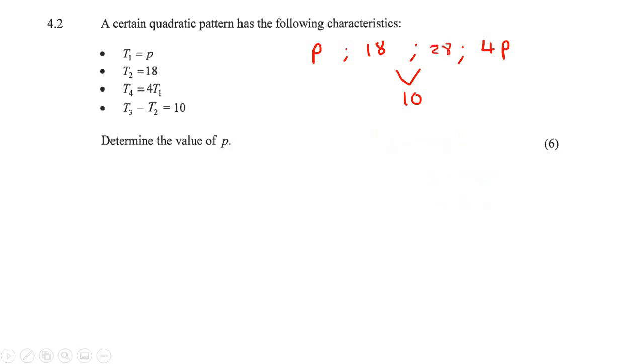What we can now do, I think the best thing we could do now, is just to keep filling in the differences. So we know that this is 18 minus P, this will be 4P minus 28, and then we go down one more level. So this would be 10 minus, in brackets, 18 minus P, and then this difference would be 4P minus 28 minus 10.